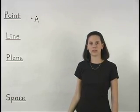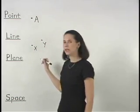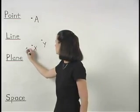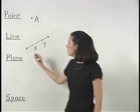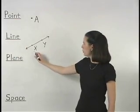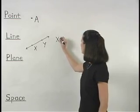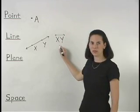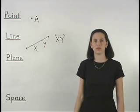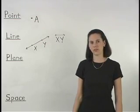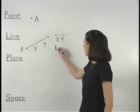If we have two points, such as points X and Y, we can introduce our next figure in geometry, which is called a line. Notice that this line passes through our two points, X and Y, so we can call it line XY, which is represented with a capital XY and a line over it. Lines can also be represented using a cursive letter over to the side, such as an L, so we can also call this line L.